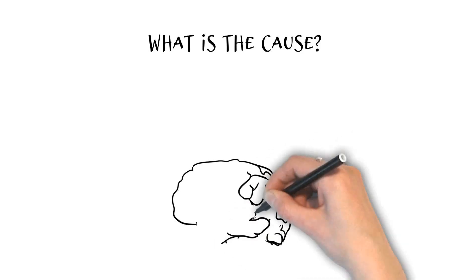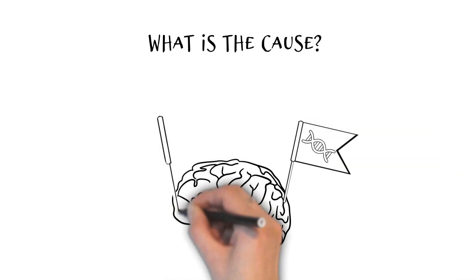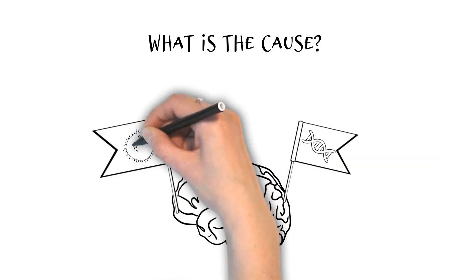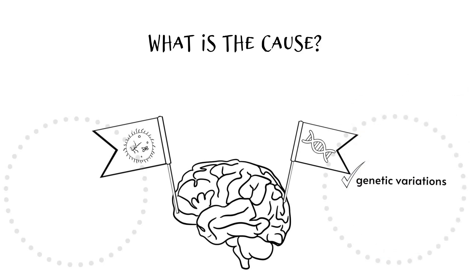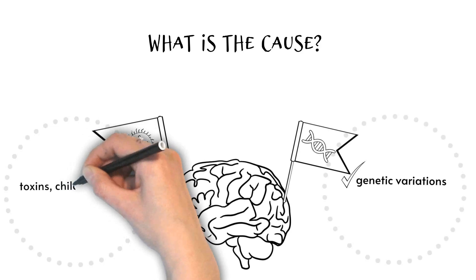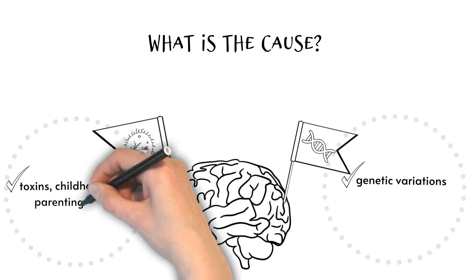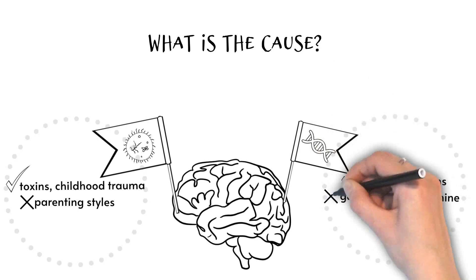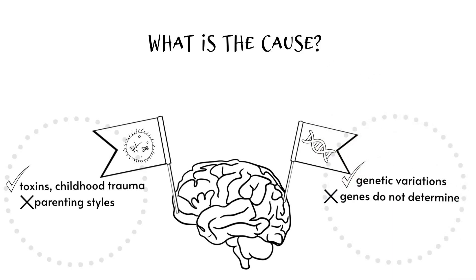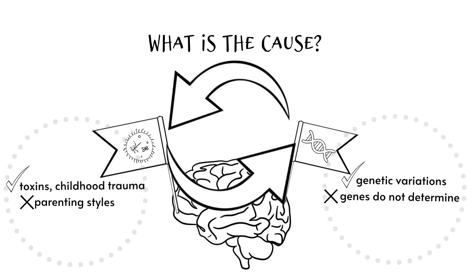What causes ADHD to develop? ADHD emerges from changes in the brain that take place over development, via a complex interaction between genes and the environment. Having genes associated with ADHD does not necessarily mean ADHD will develop. For most people, it is unlikely that there is one genetic or environmental cause. Instead, it is likely to be the result of an interaction between many small genetic and environmental causes.